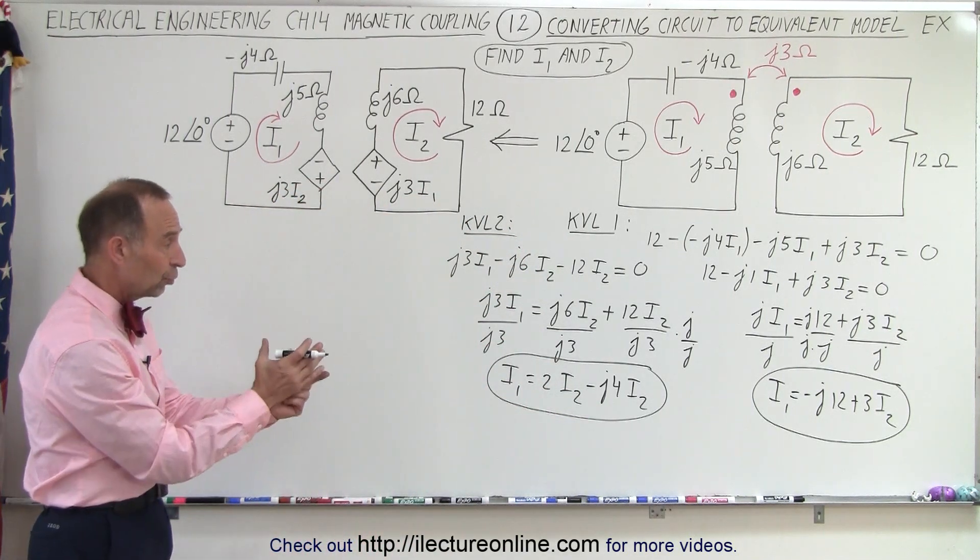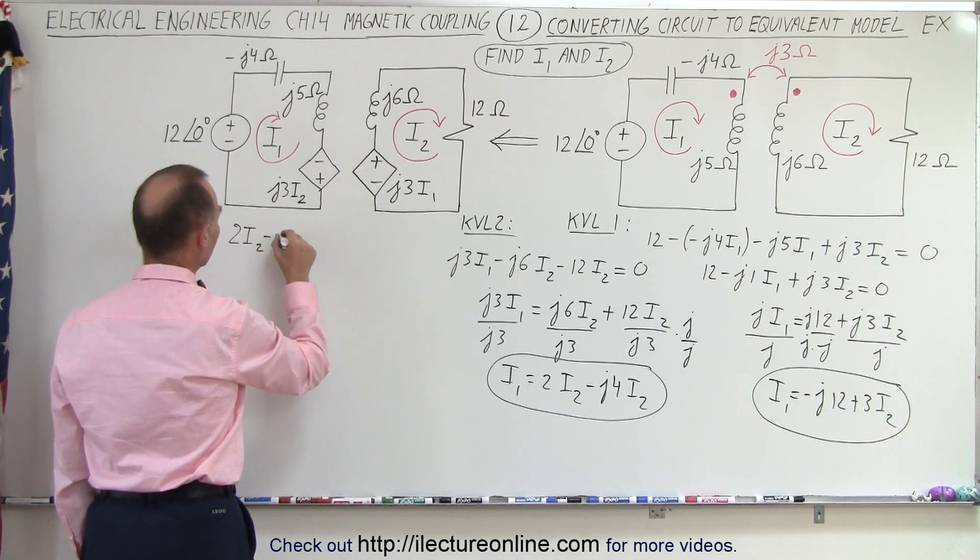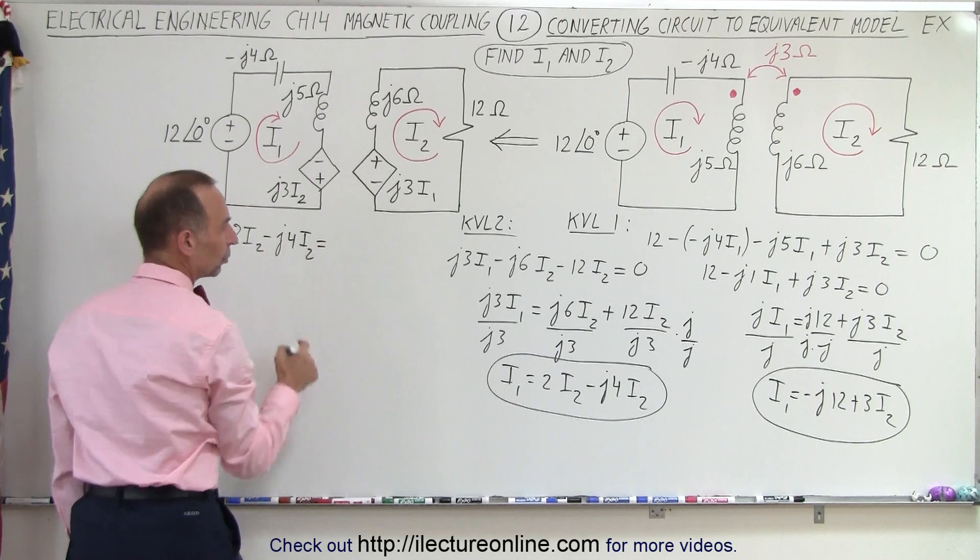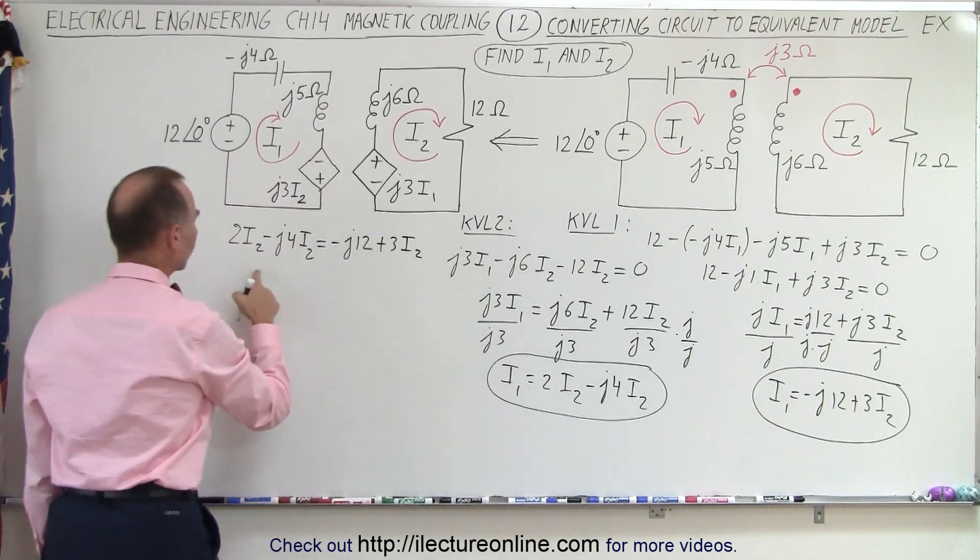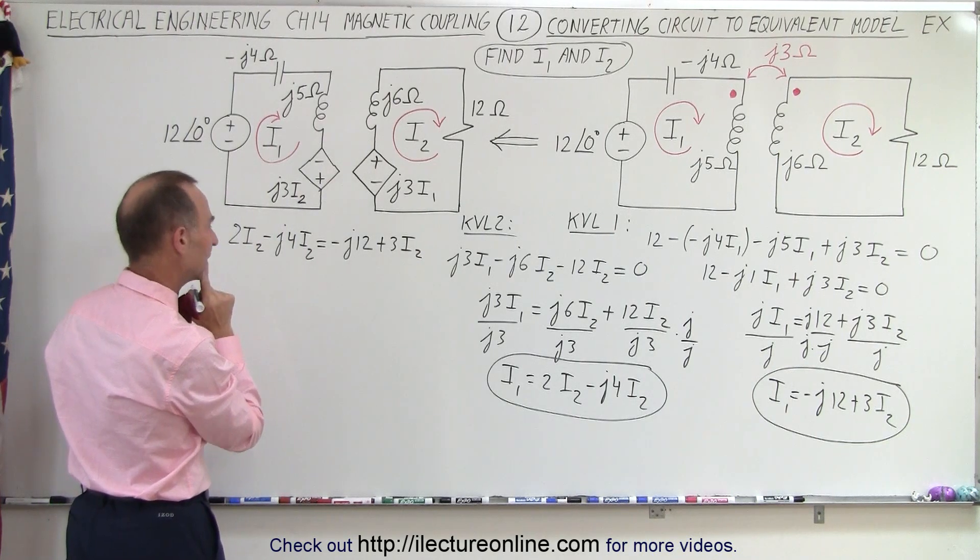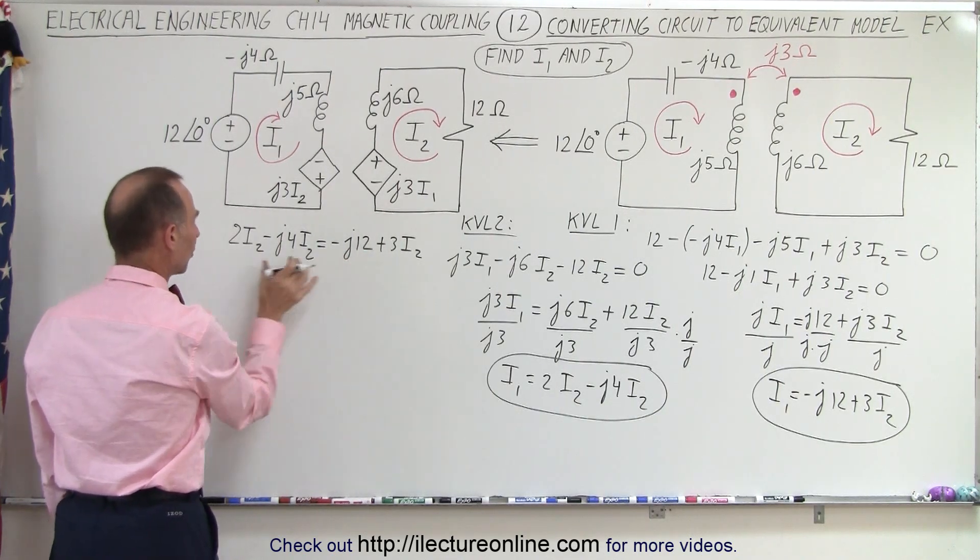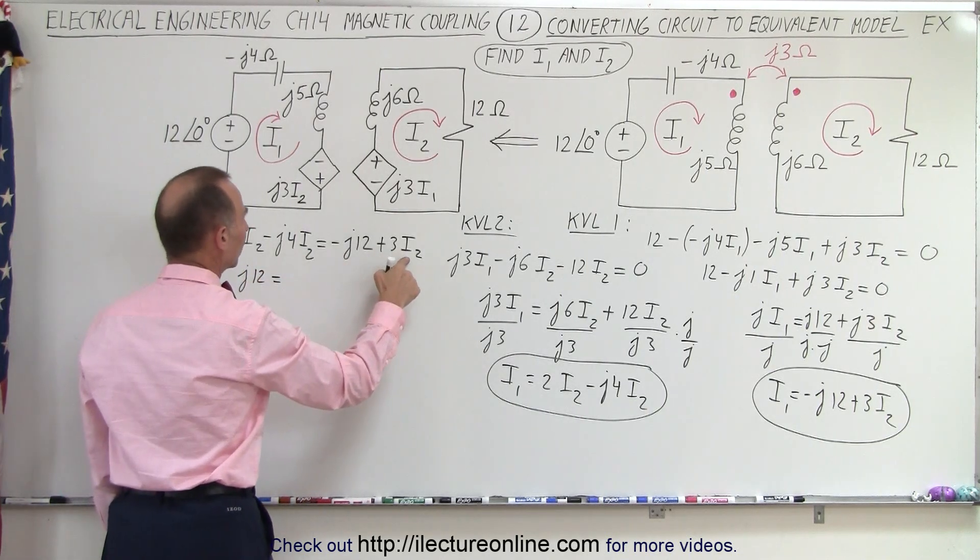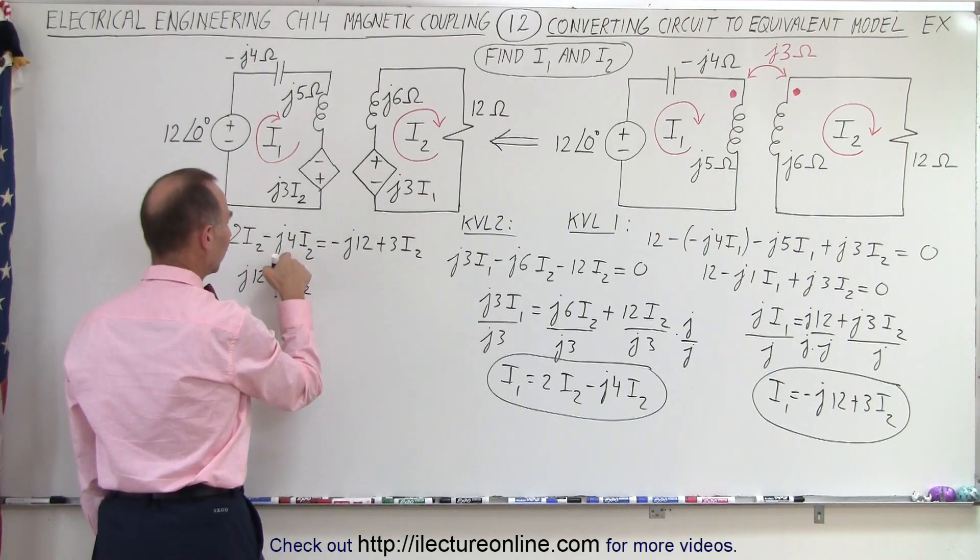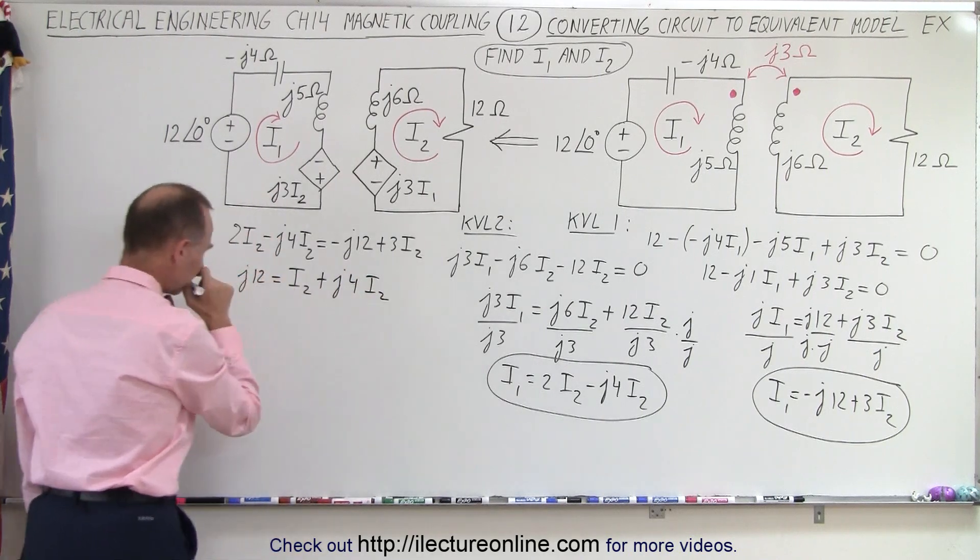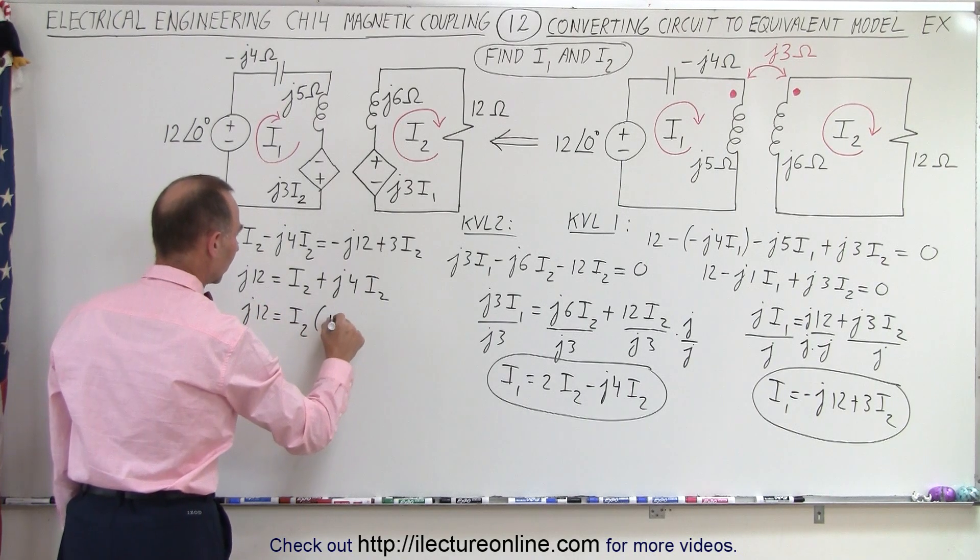Now all we have to do here is solve those two simultaneously. We set one equal to the other to eliminate I1, which gives us 2I2 minus J4I2 is equal to minus J12 and plus 3I2. And of course we're going to solve this here for I2. Let's bring this over to the other side. So we have minus J12 goes to here. That becomes plus J12 is equal to we have 3I2 and 2I2 goes to the other side, it's minus 2I2. That gives us just I2. So 3 minus 2 is I2. And this goes to the other side and becomes plus J4I2.